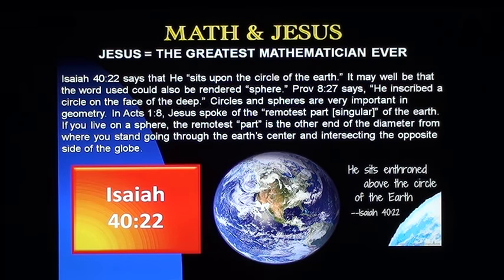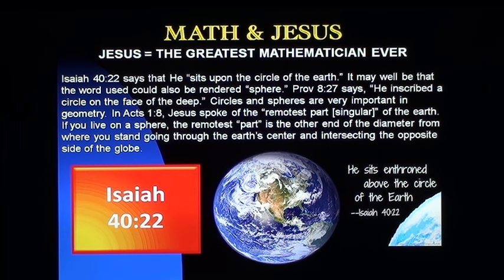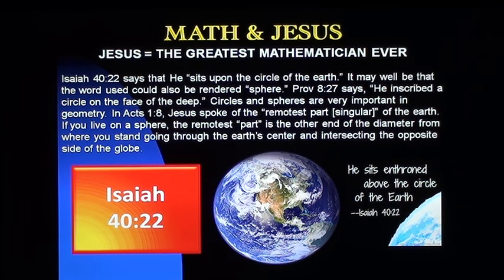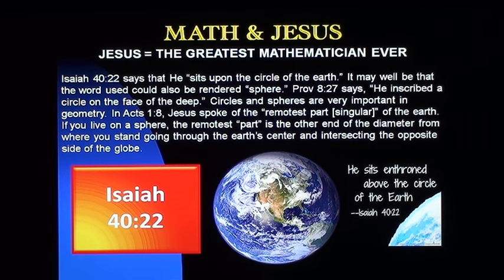Isaiah 40, speaking about the Messiah, the Lord, says that he sits upon the circle of the earth. It may well be that the word used could also be rendered sphere. Proverbs 8 says he inscribed a circle on the face of the deep. Circles and spheres are very important in geometry. In Acts 1, Jesus spoke of the remotest part — singular, not parts plural — of the earth. If you live on a sphere, the remotest part is the other end of the diameter from where you stand, going through the earth's center and intersecting the opposite side of the globe.